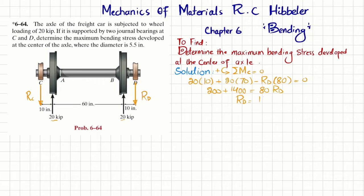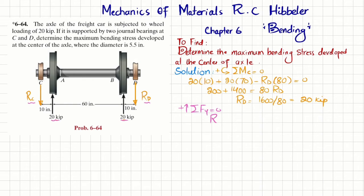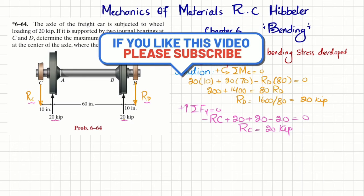From the moment equation: 200 + 1400 = 80·RD, so RD = 1600/80 = 20 kips. Now using sum of forces in the y-direction equals zero, taking upward as positive: −RC + 20 + 20 − 20 = 0, giving RC = 20 kips. We now have RC = RD = 20 kips.